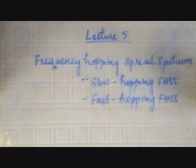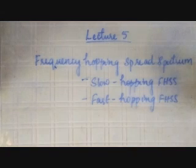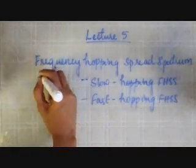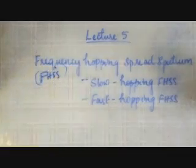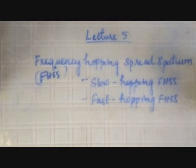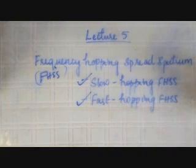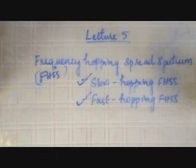Moving on to the next classification of spread spectrum technique, which is Frequency Hopping Spread Spectrum, referred to in short as FHSS. This type of technique is further classified into slow hopping FHSS and fast hopping FHSS. In this video I'll be discussing these two techniques in detail, including the transmitter and the receiver.